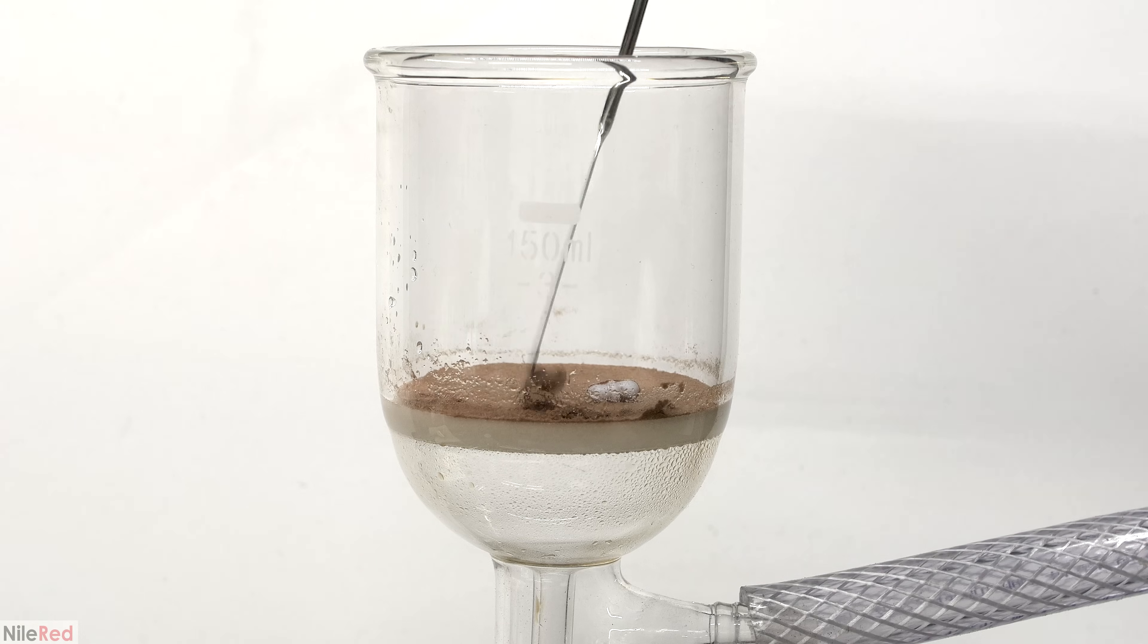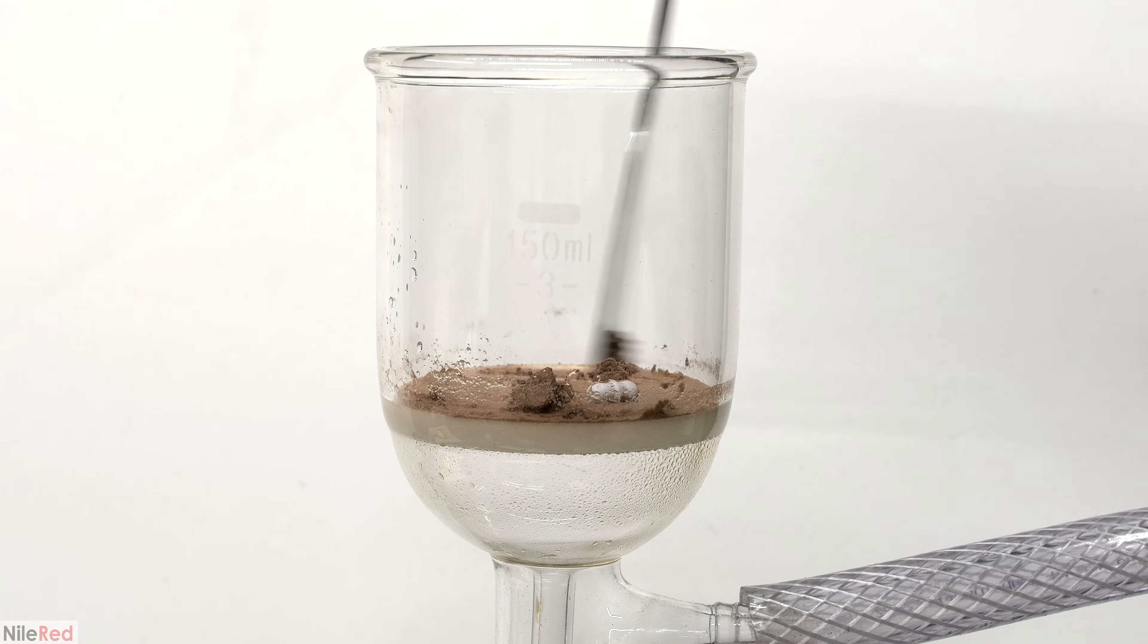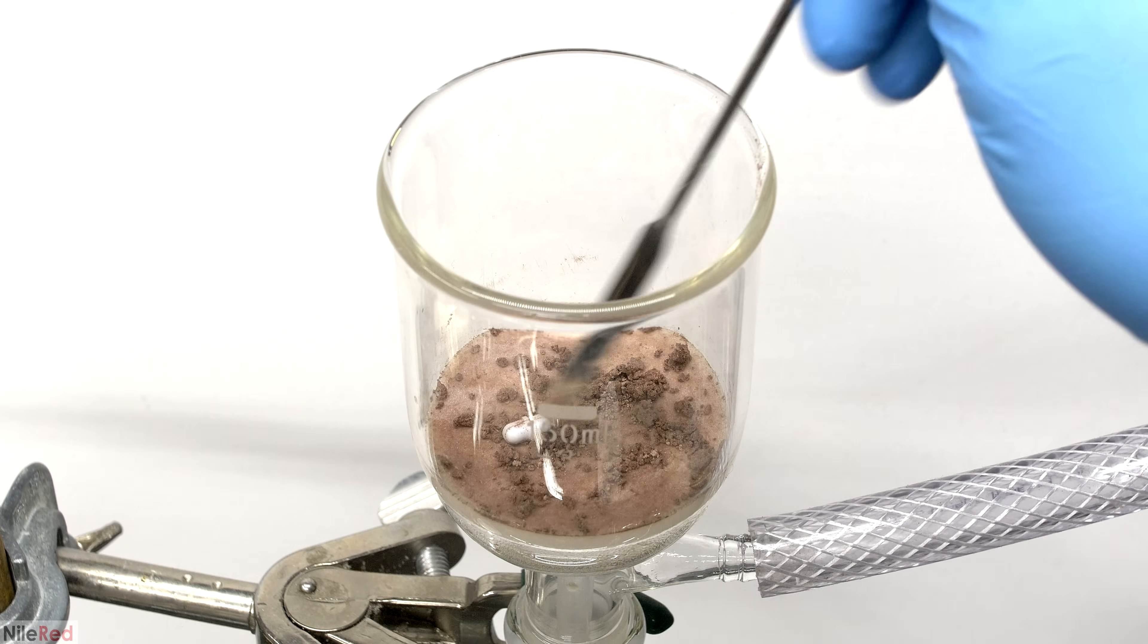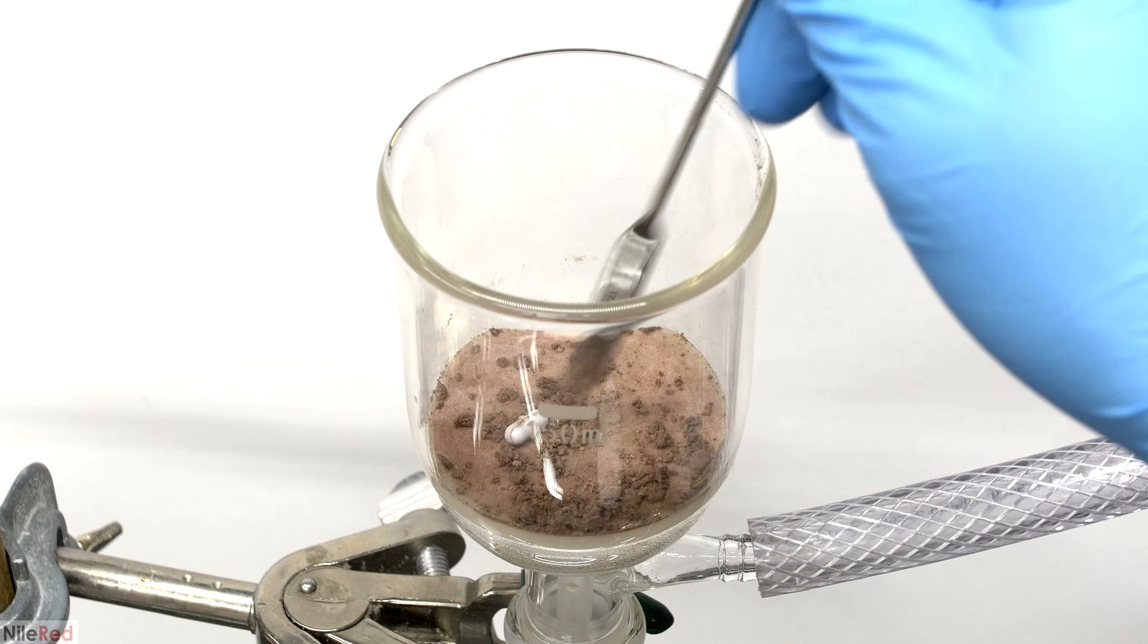Once I was done with the washing steps, I used a metal spatula to scrape off the product. I keep the vacuum on to dry it up as much as possible, and I'm eventually left with a powder that looks a lot like the p-aminophenol that I started with.